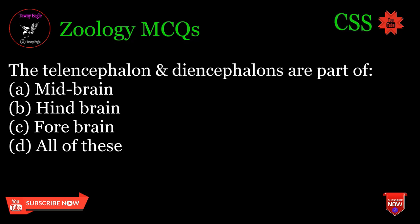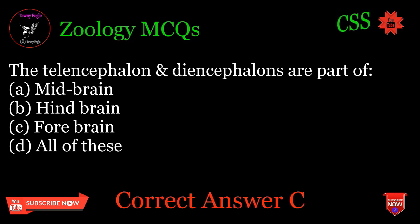The telencephalon and diencephalon are part of: A. Midbrain, B. Hindbrain, C. Forebrain, D. All of these. Correct answer: C.